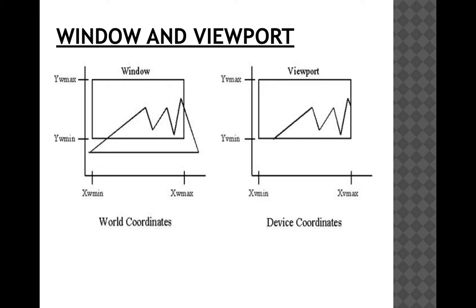This picture represents the window and viewport, the world coordinates and device coordinates. On the left-hand side you can see the world coordinates ranging from xw_min to xw_max for x, and yw_min to yw_max for y. Similarly, in the device coordinates, xv_min to xv_max are the viewport ranges for x, and yv_min to yv_max for y. The window clips only a certain part, and only the part shown in the window is shown in the viewport; the rest of the picture is clipped away.